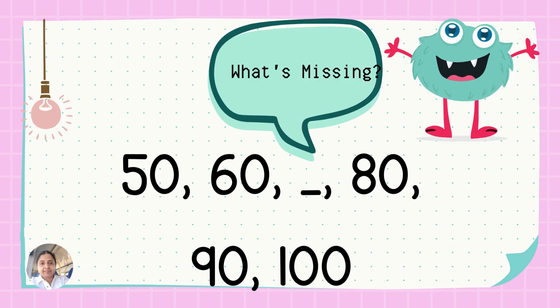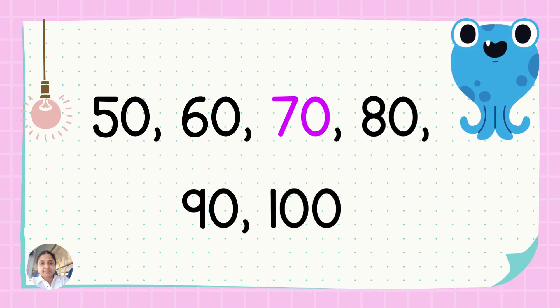Here we start with the number fifty, then we skip count in tens to go to number sixty. And then you have to tell me which number is missing here. The sequence ends in the number hundred. That's right! The missing number is number seventy. What amazing learners you are! I am so proud of you! Well done!